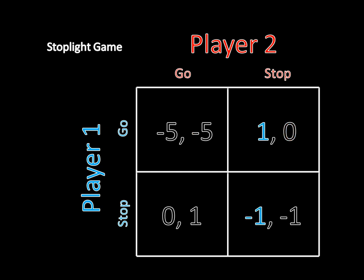And likewise, player one wouldn't want to change his strategy either. If player two is stopping, if he goes, then he gets to go to his final destination as quickly as possible, whereas if he stops, they're just wasting everyone's time. So player one would not want to change his strategy either, which means this is a pure strategy Nash equilibrium where player one chooses go and player two chooses stop.